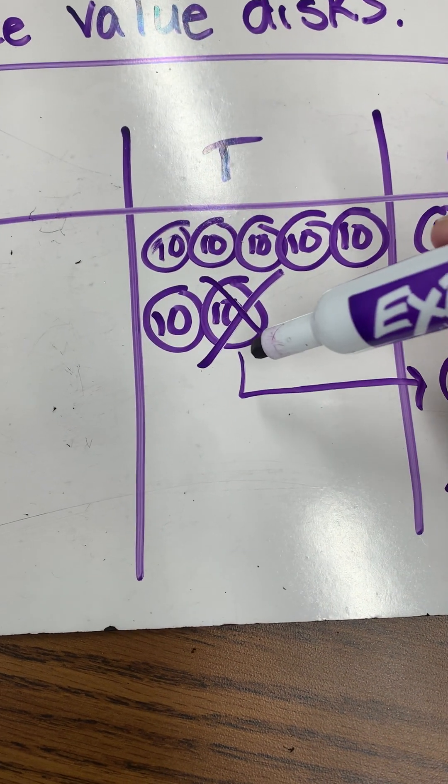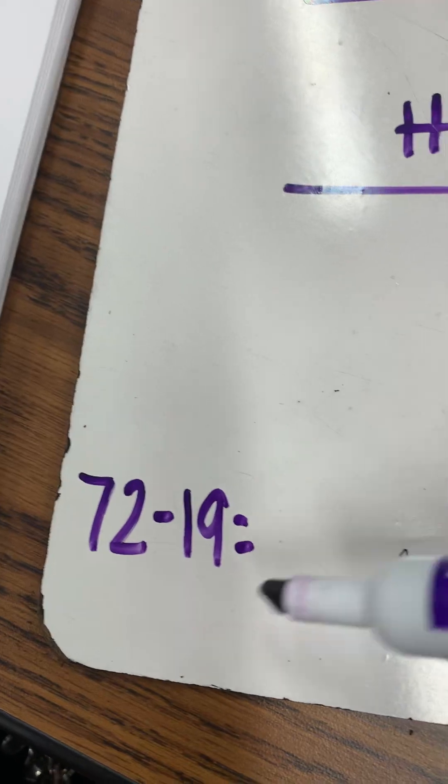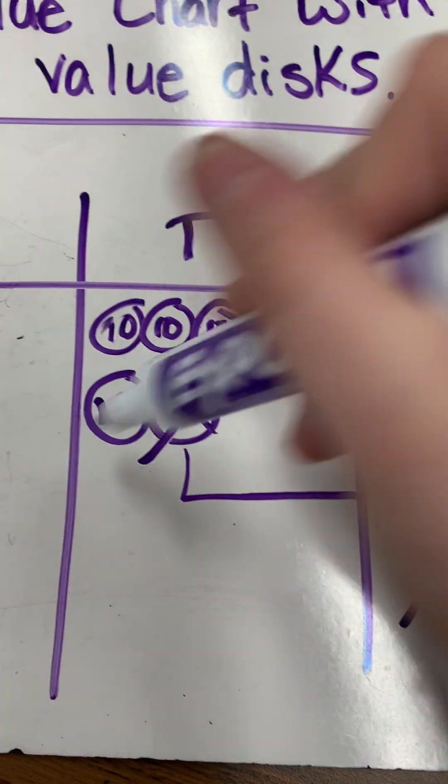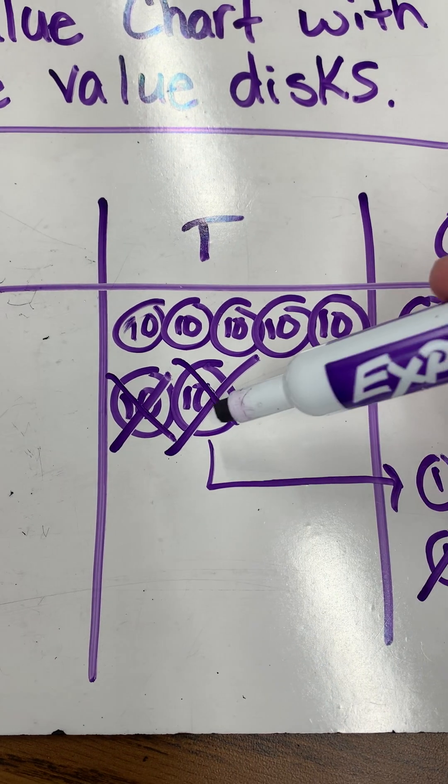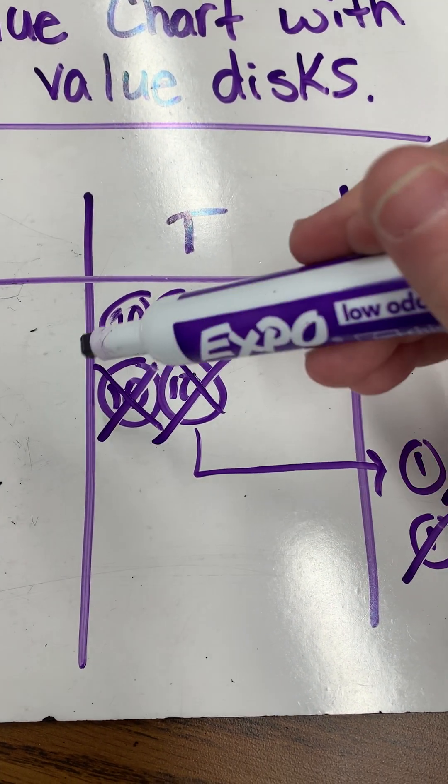Now I need to subtract my 10s. I have only 1 in my 10s place, so I need to get rid of a 10. So this one was unbundled, so that one is no longer there. This one is our number we subtracted.